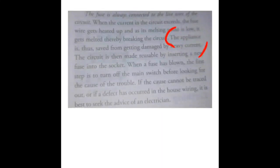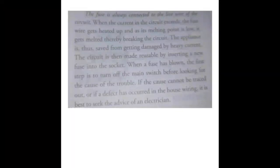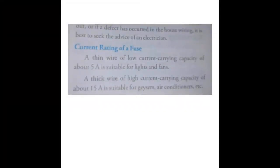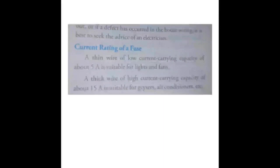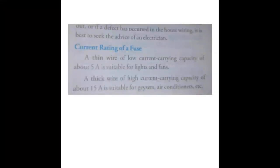If one of your appliances switches off and you find that its fuse is blown, the first step is to turn off the main switch so other appliances are not affected. A thin wire of 5 ampere rating is used for lighting and fans. For heavier appliances like geysers or air conditioners, a thick wire with 15 ampere current capacity is needed. This is called the current rating of the fuse — the wire used depends on what type of appliances are being run.